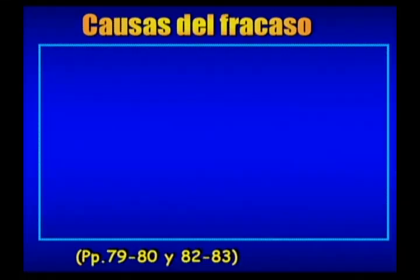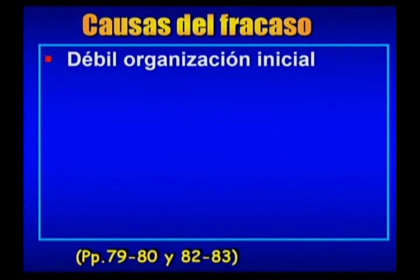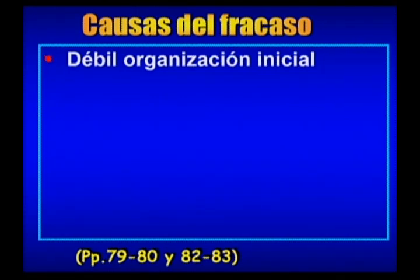Causas del fracaso. En el libro de texto están las páginas donde pueden ampliar este contenido. La primera es la débil organización inicial. Recuerden todos los problemas iniciales: desde que la guerra se preparaba en un movimiento conspirativo dentro de las logias masónicas, los cubanos no se ponían de acuerdo sobre cuándo comenzar. Esto dividió el movimiento conspirativo entre los que seguían a Diego Vicente Aguilera, que preferían esperar después de la zafra, y otros como Céspedes que querían empezar ya.